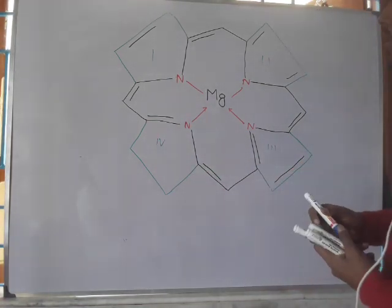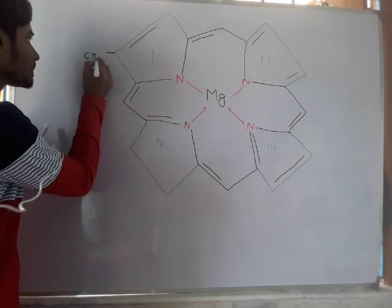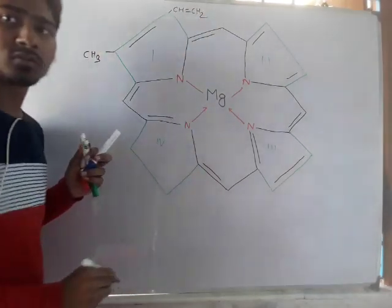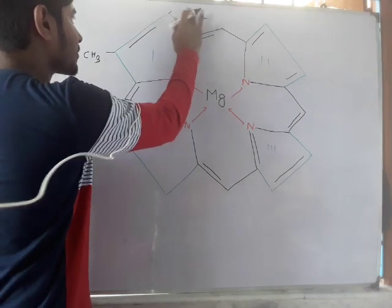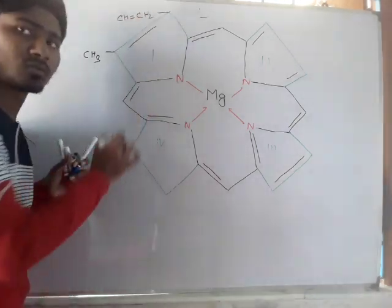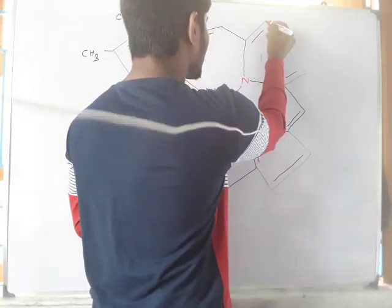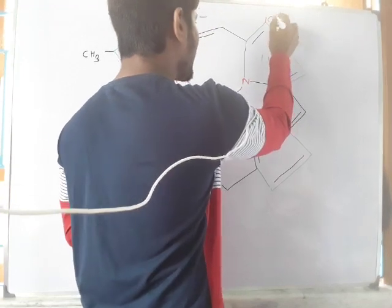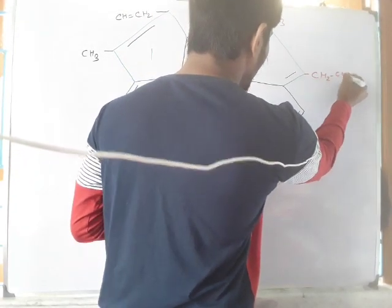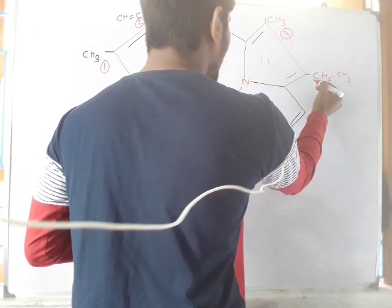Now we will give the groups in their respective positions. So first of all this is the methyl group, this is the CH equals CH2 group. Perhaps you can see this, so I am writing it here. CH equals CH2, then CH3 ethyl group. So it is the first group, it is the second group, it is the third group, it is the fourth group.